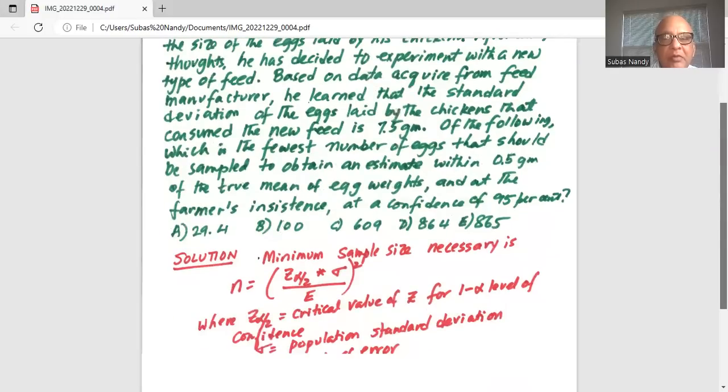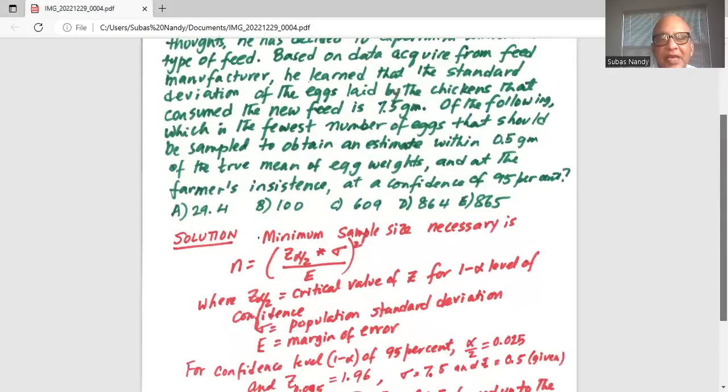So we will use the minimum sample size formula which is n equal to z alpha by 2 multiplied by sigma divided by E, the whole thing squared. What is z alpha by 2? It is the critical value of z for 1 minus alpha level of confidence. What is sigma? It is the population standard deviation. And capital E is the margin of error.